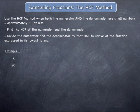Example 1: 8 over 20. Start by writing a list of the factors of 8 and 20. The factors of 8 are the numbers that will divide into 8 with a remainder of 0. They include 1, 2, 4 and 8.